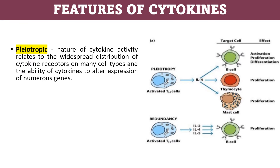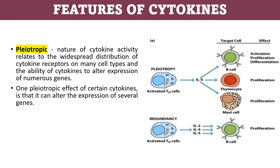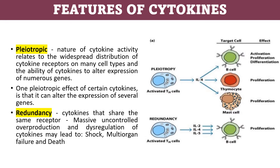Some features of cytokines: They are pleiotropic, meaning the nature of cytokine activity relates to the widespread distribution of cytokine receptors on many cell types and the ability of cytokines to alter the expression of numerous genes. One pleiotropic effect is that a cytokine can alter the expression of several genes. The next feature is redundancy — cytokines that share the same receptor. Massive uncontrolled overproduction and dysregulation of cytokines may lead to shock, multi-organ failure, or death.